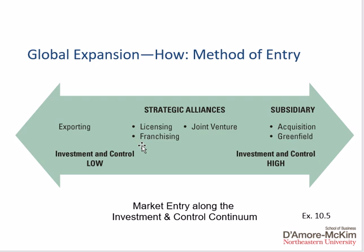Moving further along toward strategic alliances, we look at licensing, franchising, and joint ventures, which are partnership agreements with foreign entities. These offer the benefit of working with local organizations or partners who know the market better. They require more investment than exporting but also provide greater control, risk sharing, and allow the firm to learn about those markets and national differences.